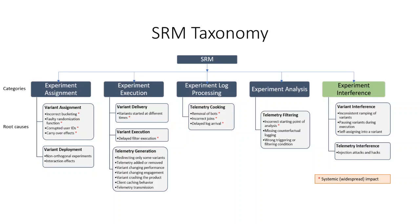To give you a flavor of our results, here is the SRM taxonomy illustrating that we identified five major categories of SRMs, each with several different root causes. For example, SRMs can happen in the experiment assignment stage due to corrupted device IDs. Or, they can happen in the experiment execution stage due to one of the variants logging more or less telemetry, or later on due to incorrect joins. They can also happen in the experiment analysis stage due to wrong conditions used for the starting or the stopping point of an experiment. This taxonomy reveals how extensive this problem is and it can be used by practitioners to structure their investigation process and accelerate the resolution.